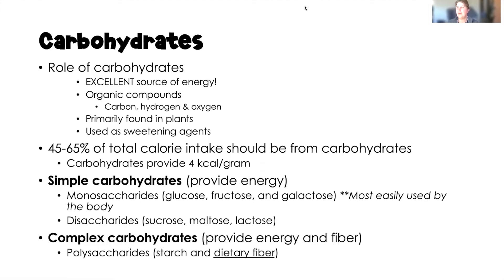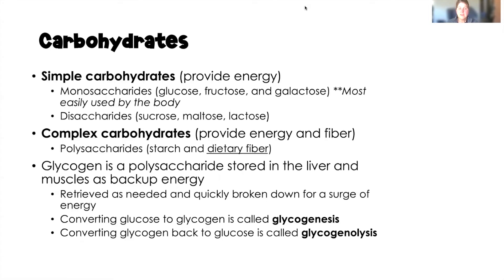Glycogen is a polysaccharide that is stored in the liver and in the muscles, and it's used as backup energy. When we eat that complex carbohydrate and it hits our bloodstream and we don't need it, that glucose gets converted to glycogen and stored in our liver and muscles. The next time we need it, we can pull it out for a quick surge of energy. The process of converting glucose to glycogen is called glycogenesis, and converting glycogen back to glucose is called glycogenolysis.